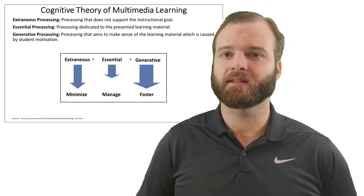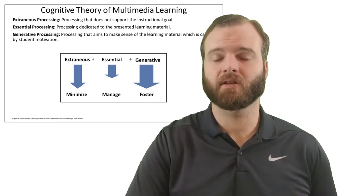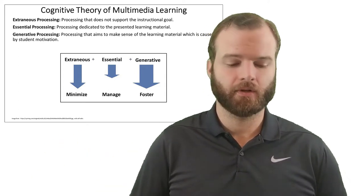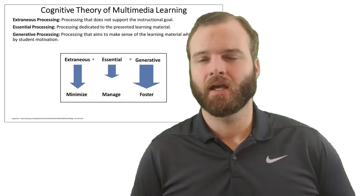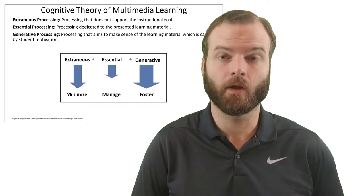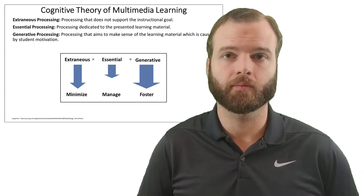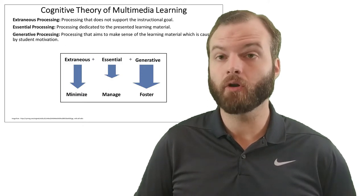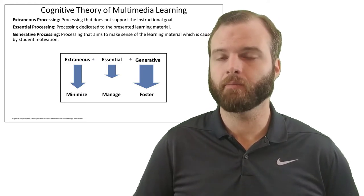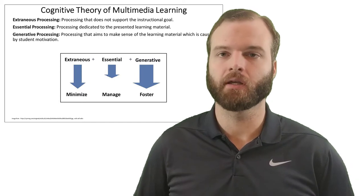The next would be essential processing, which is all the processing directly related to our instructional goal — the processing we expect students to do in order to learn, process, and send information to long-term memory. And the last is generative processing, which is about the motivation for students to learn the content. How do we motivate students to want to learn? Are we doing things before or at the beginning of the lesson to help students understand why the content is important? Because motivation has a direct correlation to how much information students can take in through their working memory and ultimately retain in long-term memory.